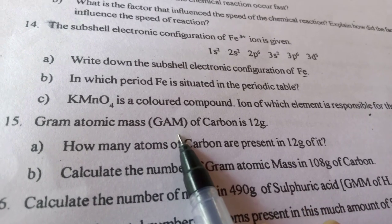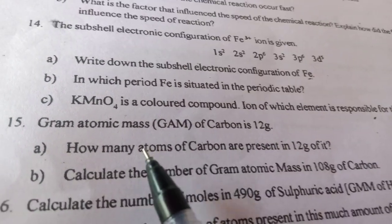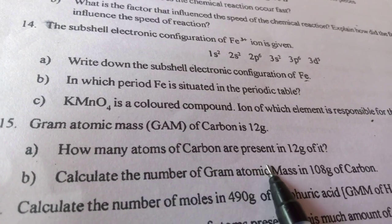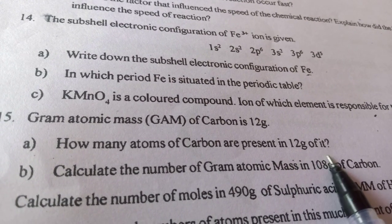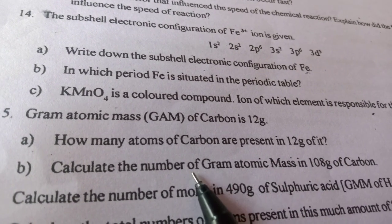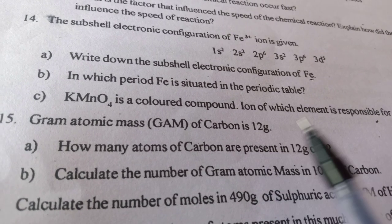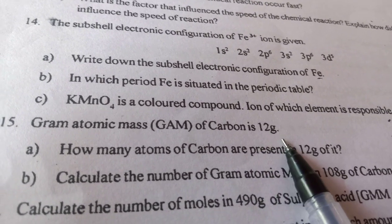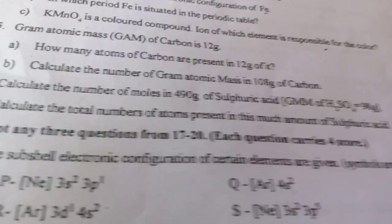The next one is, gram atomic mass of carbon is 12 gram. How many atoms of carbon are present in 12 gram of it? Atomic mass of carbon is 12 gram.